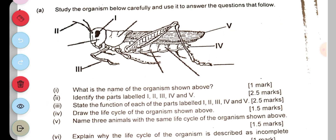The final question asks to name three animals with the same life cycle as the organism shown. Animals that undergo incomplete metamorphosis include the cockroach, termites, cricket, and dragonfly.